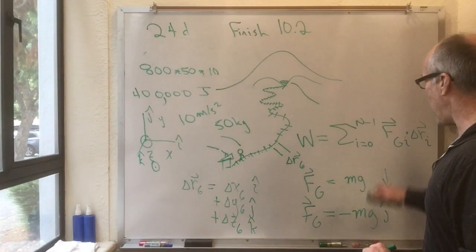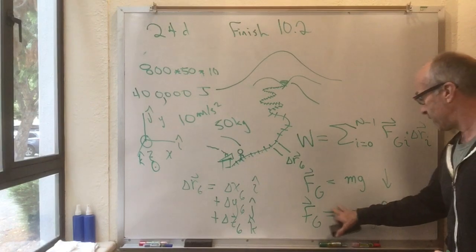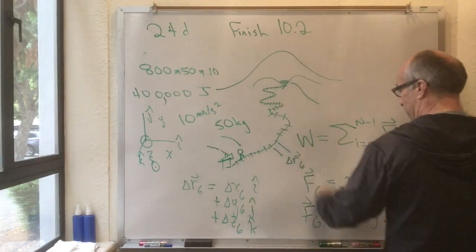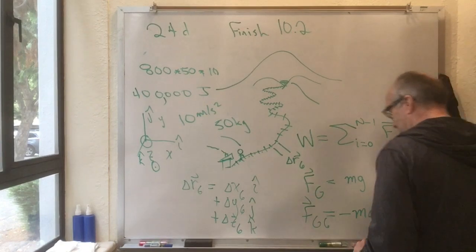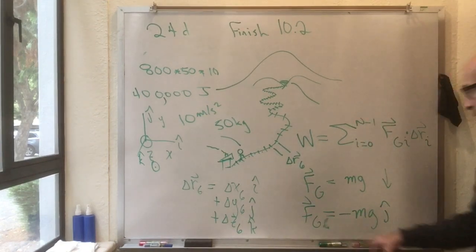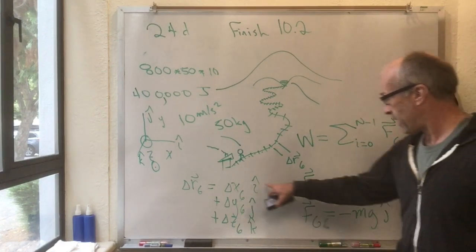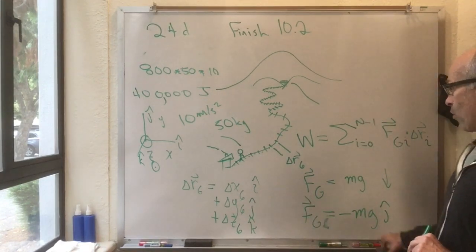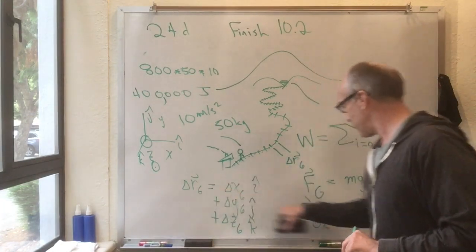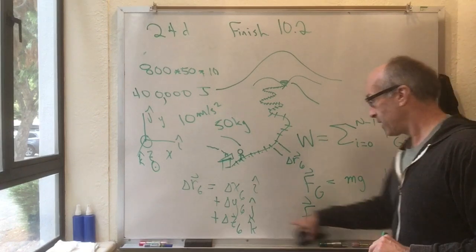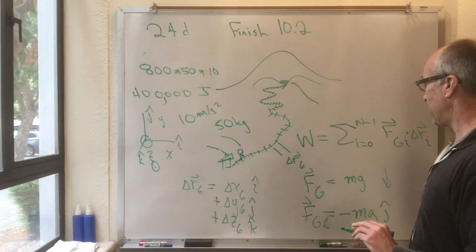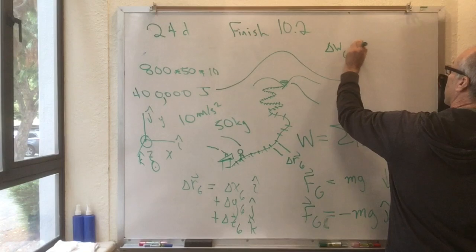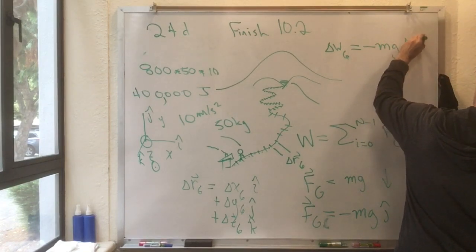Now, it's our job to calculate the work to dot this into this. Of course, this never changes. Fg, wherever you are on this path, is down. So, I didn't need a little sub 6 here or a little sub 6 on the right side. This is just f sub g. So, f sub g dotted into this, well, j hat dot i hat is 0, j hat dot j hat is 1, and j hat dot k hat is 0. So, the only term I pick up when I dot f sub g into delta r is minus mg delta y sub 6. So, for this example here, my little bit of work done in the sixth path segment is minus mg delta y sub 6.